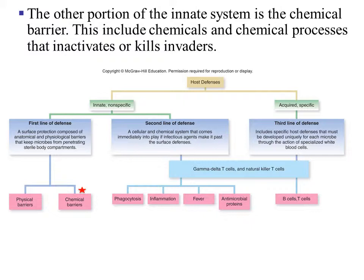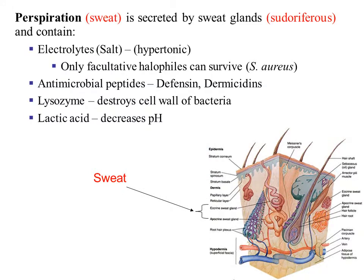Now we will discuss the chemical barriers. The first chemical barrier is sweat, scientifically referred to as perspiration. Perspiration is secreted by the sweat glands, the sudoriferous gland. Within perspiration, you will have electrolytes such as sodium, potassium, chloride, and calcium. You will also have antimicrobial peptides, lysozymes, and lactic acid.